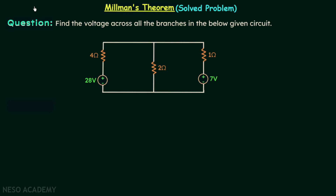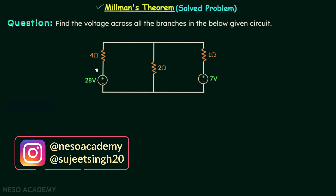In the previous lecture we had a discussion on Millman's theorem and now we are going to solve one problem with the help of Millman's theorem. In this problem we need to find the voltage across all the branches in the given circuit. This is the circuit and we need to find the voltage across the three branches we have.